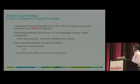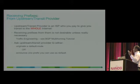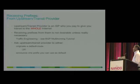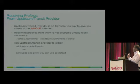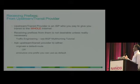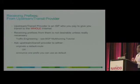From upstream service providers, you have a few alternatives. If you are getting transit from multiple service providers, you can receive the full table from each one — though that's usually costly. If you're using just one transit provider, you may point a default route to that provider, or receive a default route from them. In some cases you may receive partial routes. If peering with a service provider at multiple locations, you can use default plus partial — the provider's internal network routes plus default for the rest of the internet.